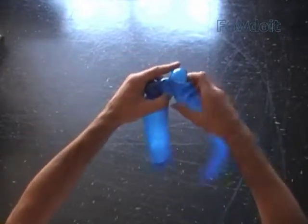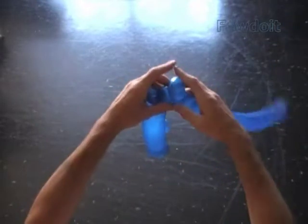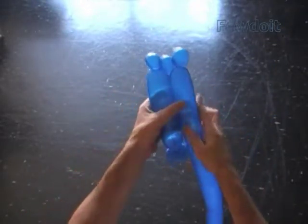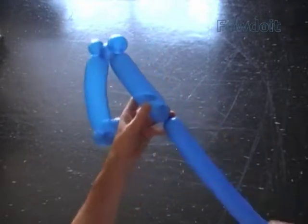Now we have to twist the eighth bubble of the same size as the fourth bubble. Bring balloon closer to the fourth bubble. Measure the size of the eighth bubble and twist it.